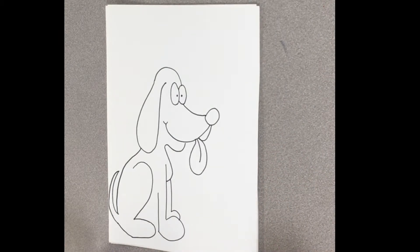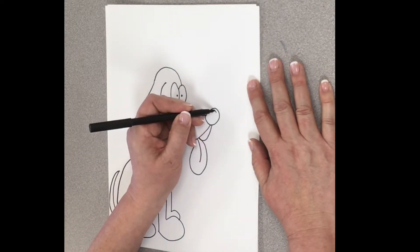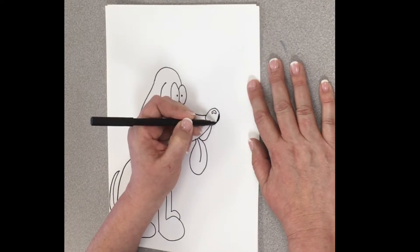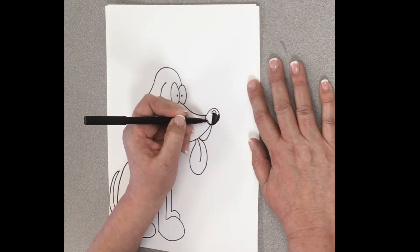Okay. Now, I need to put some more details on. So, what I'm going to do is I'm going to make his nose be nice and shiny. So, I'm going to leave a little area right here.